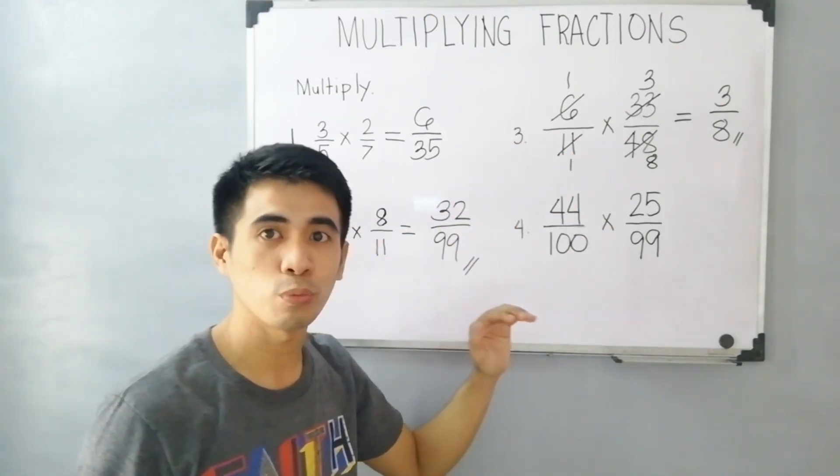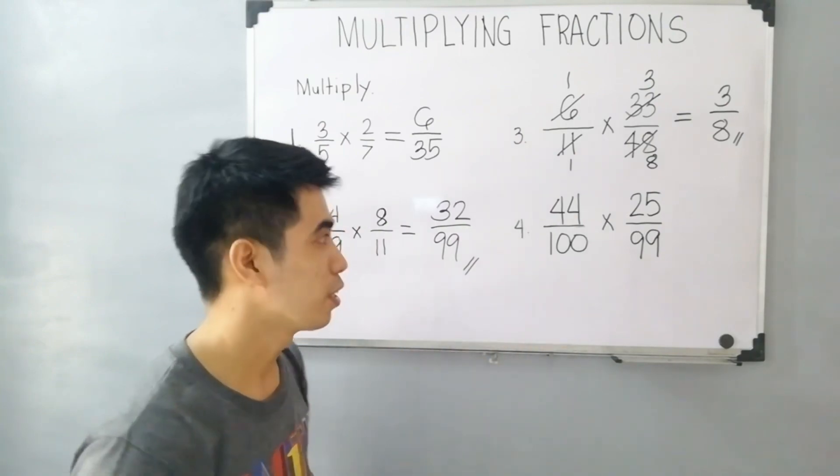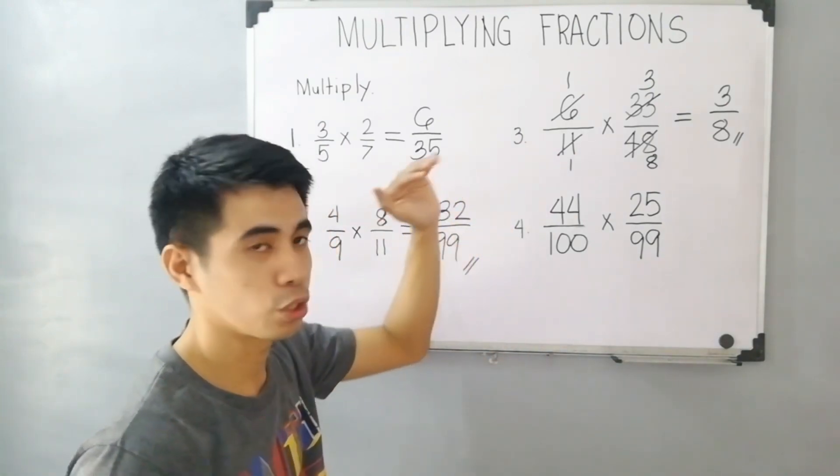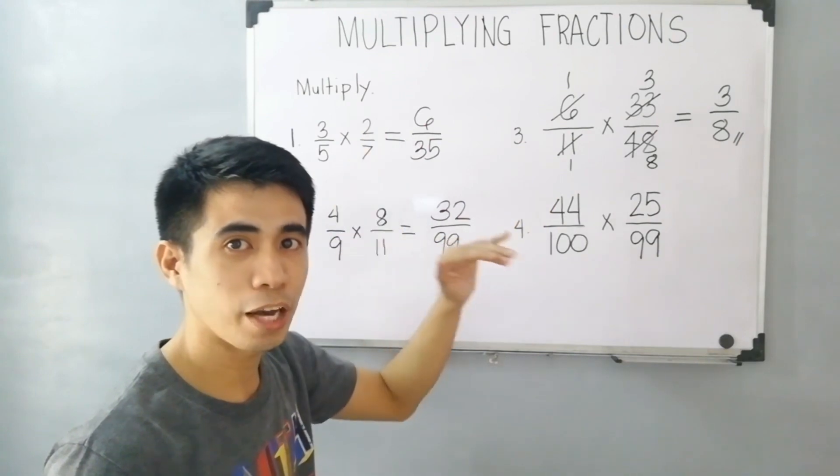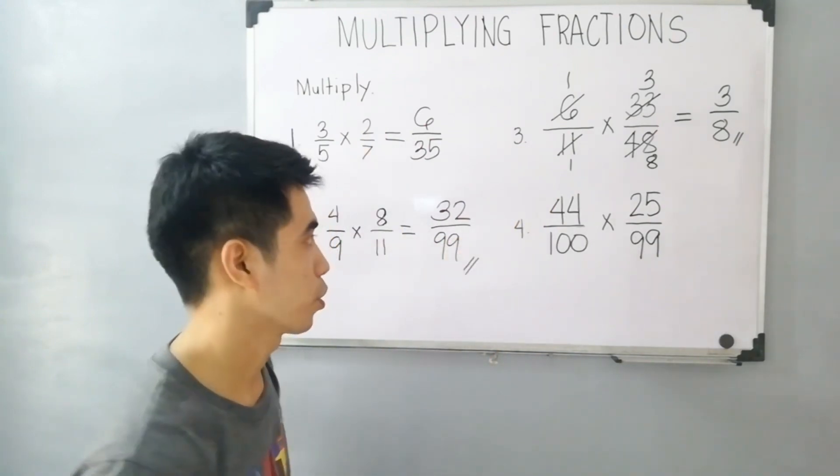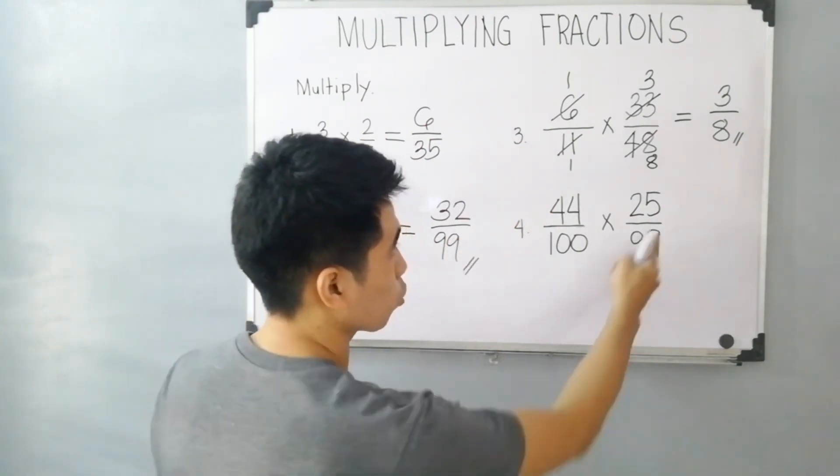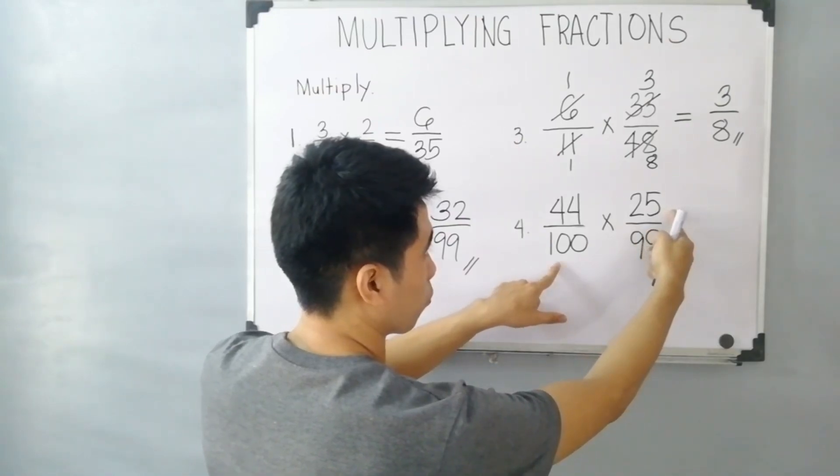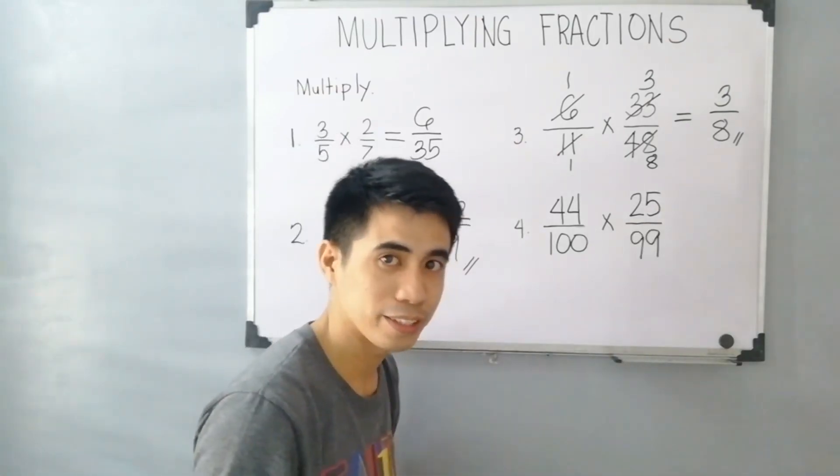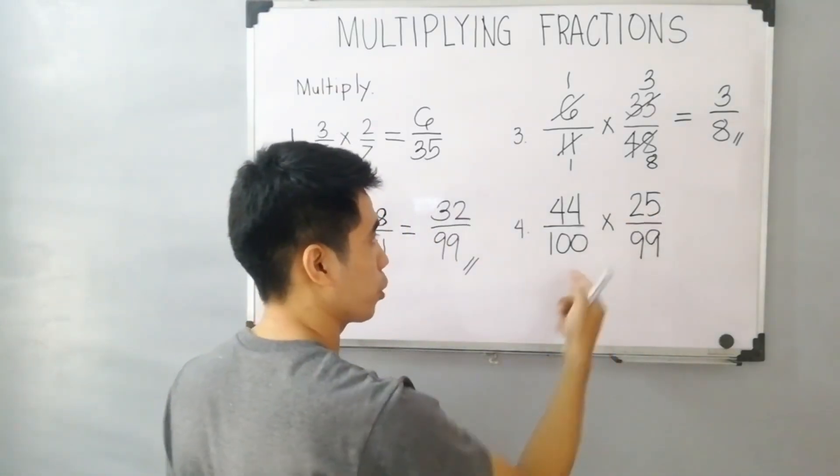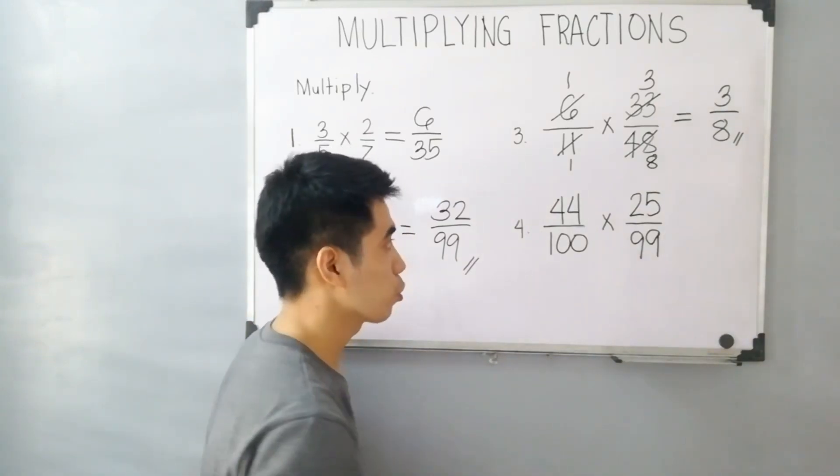For you to multiply the fractions easily, analyze again if your numerators and denominators can simplify. This one, 25 and 100, we can simplify 25 and 100. These numbers are divisible by 25.